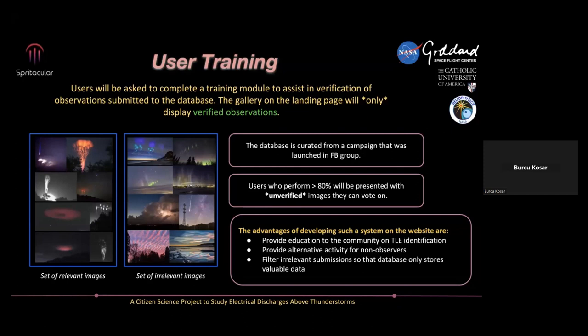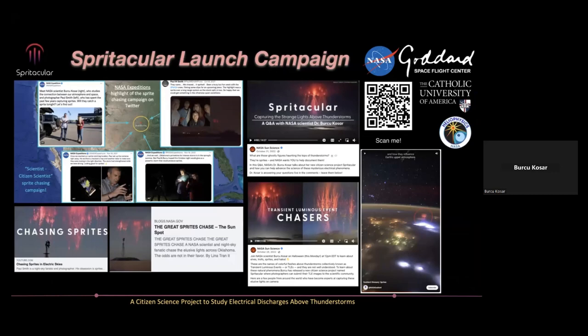We implemented a training system: when you become a user, you take a training quiz and if you pass it with a certain threshold, your status is upgraded to super user, allowing you to see the unverified gallery and help with the verification pipeline. This verification system provides education and also gives an alternative activity to non-observers — not everybody has a DSLR, but anyone can learn about sprites by taking this quiz on the website.